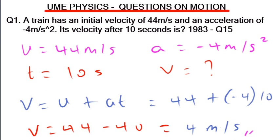You might be wondering how the final velocity reduced to 4 m/s whereas initially it was 44 m/s. Do not forget that the acceleration was -4 m/s², meaning it was decelerating. If it were positive 4 m/s², the final velocity would increase and be greater than the initial velocity. Since it was decelerating, its final velocity becomes very low and at the latest time will approach zero.